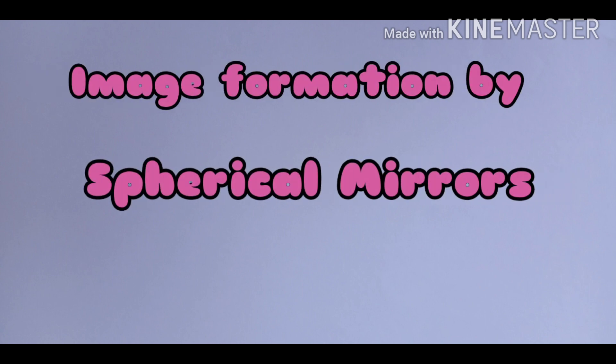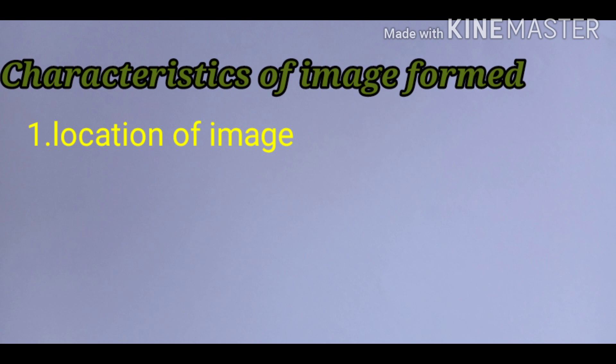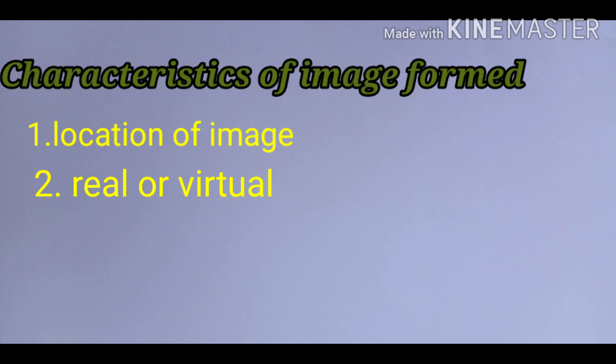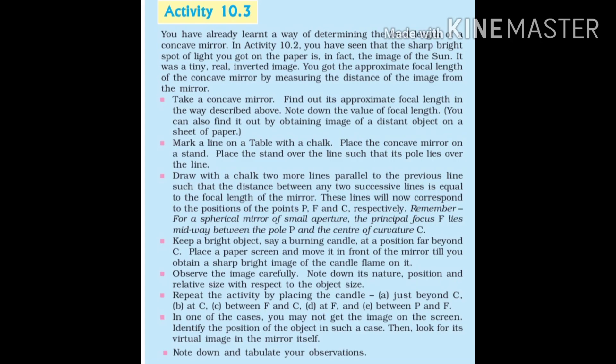You have studied about image formation by plane mirrors and know the nature, position and relative size of images. How about the images formed by spherical mirrors? How can we locate the image formed by a concave mirror for different positions of the object? Are the images real or virtual? Are they enlarged, diminished or have the same size? Let's explore this with an activity.